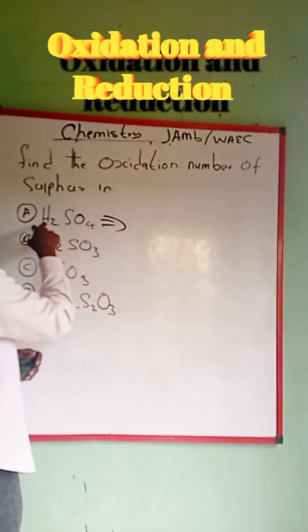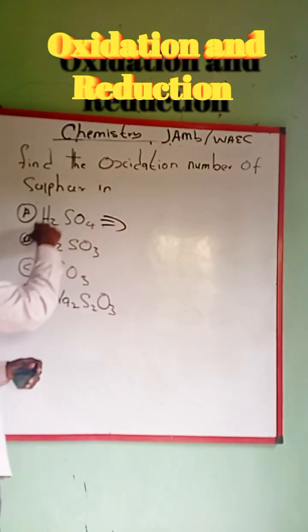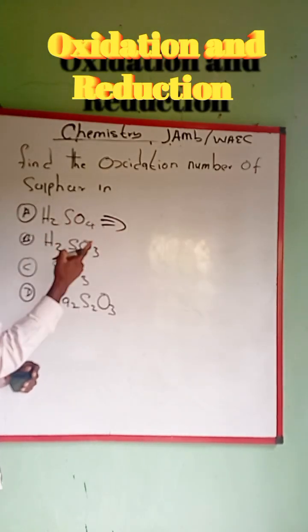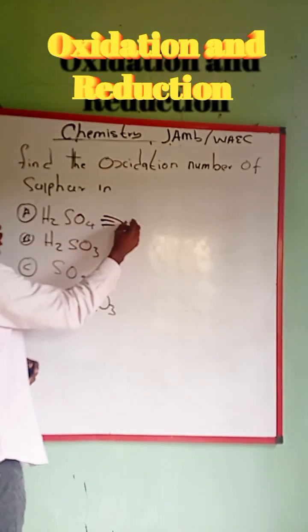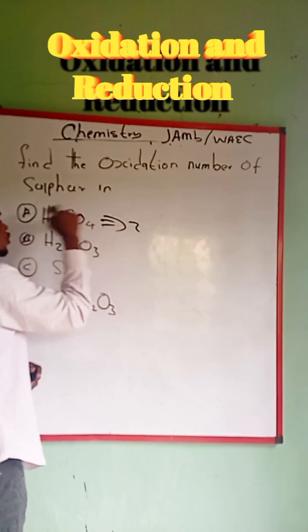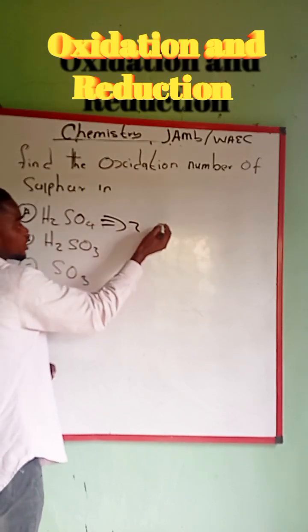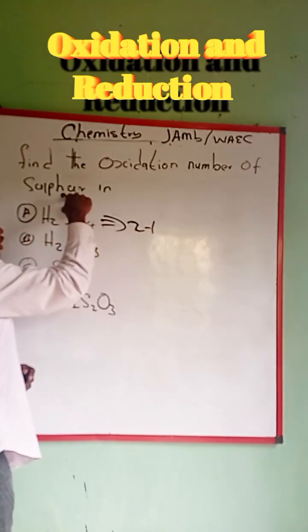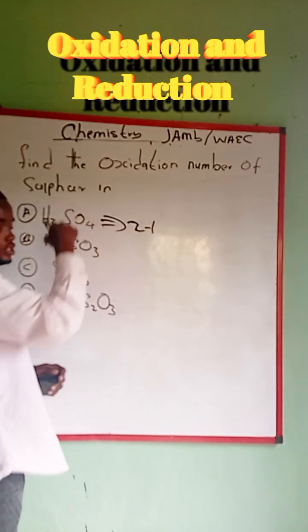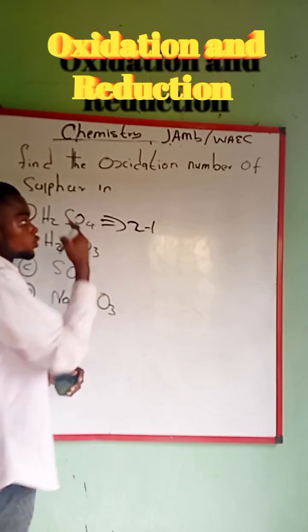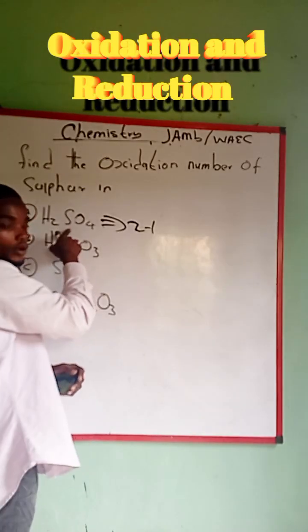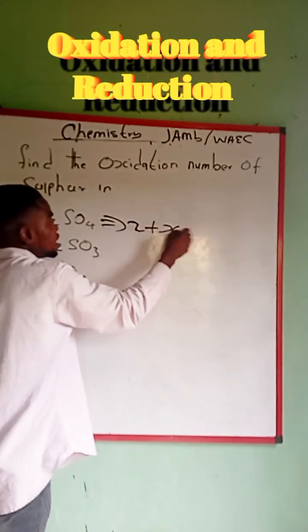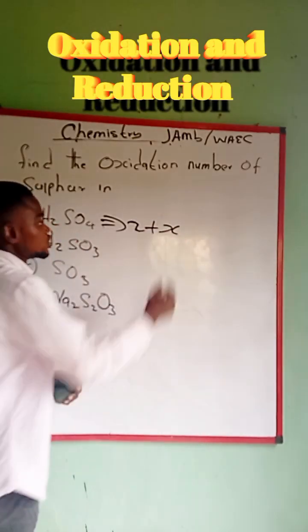Now here, the valence of hydrogen is just one, and we're going to multiply by one, which is still going to give us two. We add it to the oxidation of sulfur, which is unknown — let's call it S.